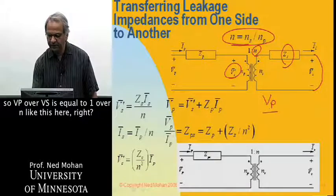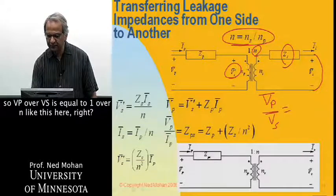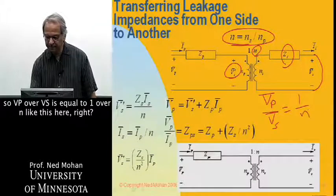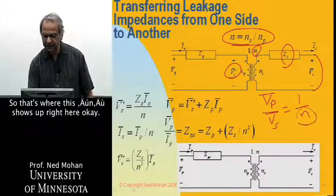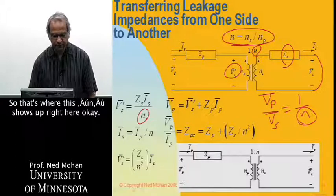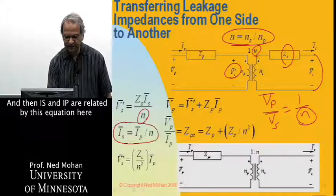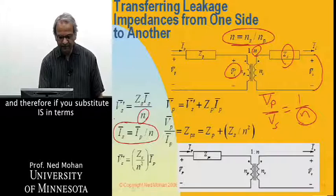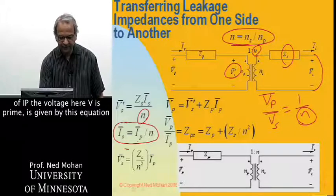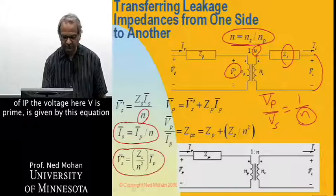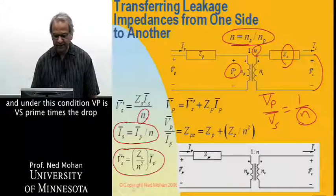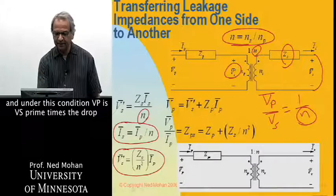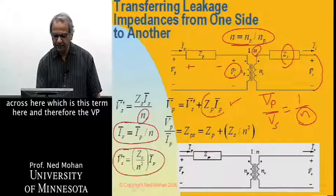So VP over VS is equal to 1 over N, like this here, right? So that's where this N shows up right here. And then IS and IP are related by this equation here. And therefore, if you substitute for IS in terms of IP, the voltage here, VS prime, is given by this equation. And under this condition, VP is VS prime times the drop across here, which is this term here.